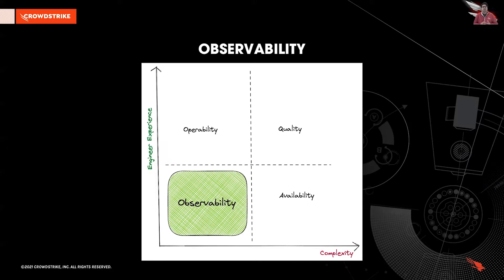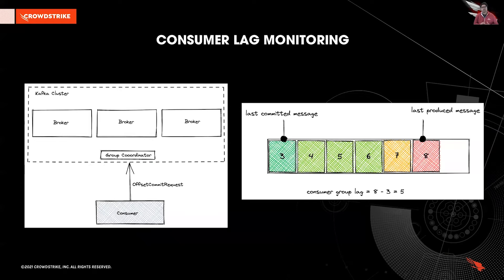Let's start with observability. Here we focus on inferring the operational state of our data streaming infrastructure from the knowledge of external outputs. One of the key metrics to monitor when working with Kafka as a data pipeline or a streaming platform is consumer group lag. Lag is the delta between the last committed message and the last produced message — in other words, lag indicates how far behind your application is in processing up-to-date information. Also, Kafka persistence is based on retention, meaning that if your lag persists, you will lose data at some point in time. So the goal here is to keep lag to a minimum.